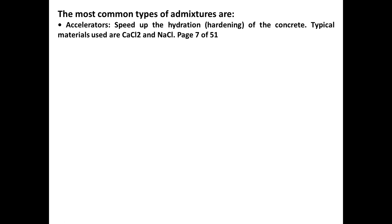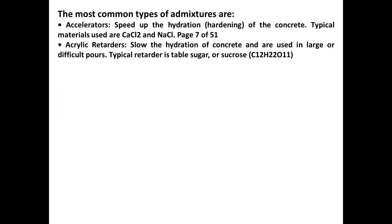The most common types of admixtures are the following. First, we have accelerators, which speed up the hydration or hardening of the concrete. Typical materials used are calcium chloride and sodium chloride. Retarders slow the hydration of concrete and are used in large or difficult pours. A typical retarder is table sugar or sucrose, C12H22O11.